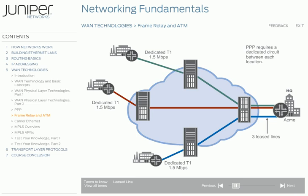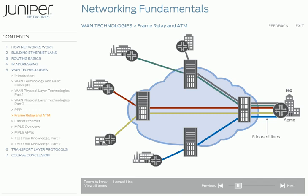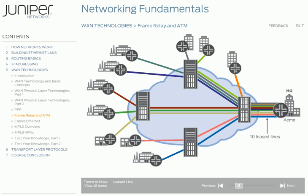Every new Acme company location requires an additional leased line and an additional router port at corporate headquarters. If you need to add five new locations or ten, not only will you need five or ten new leased lines, which are extremely expensive, you might even need to get a new, larger router with additional router ports to handle those new locations. In the 1980s and the 1990s, new WAN technologies emerged as alternatives to dedicated leased lines for site-to-site communication. First, frame relay — another WAN technology that operates at the data link layer.